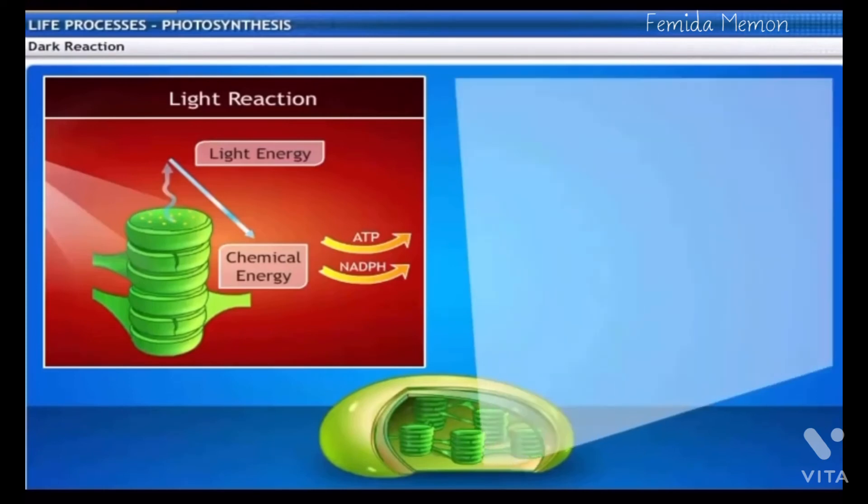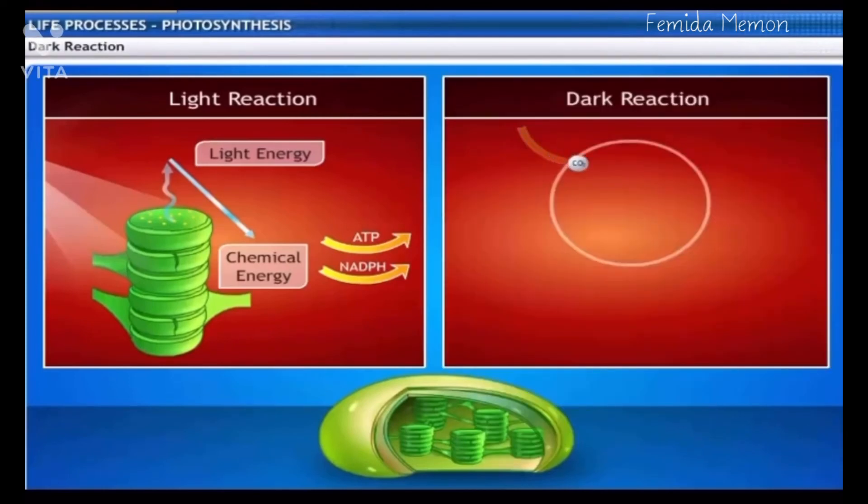Dark reaction takes place in the stroma of chloroplast by reducing carbon dioxide to carbohydrates, utilizing energy from ATP. It can take place with or without the presence of sunlight. Hence, the name dark reaction.